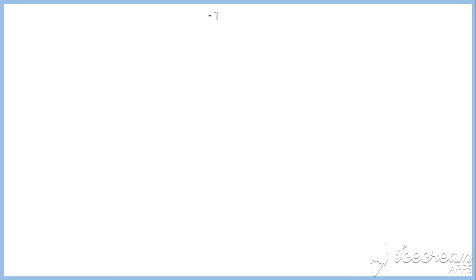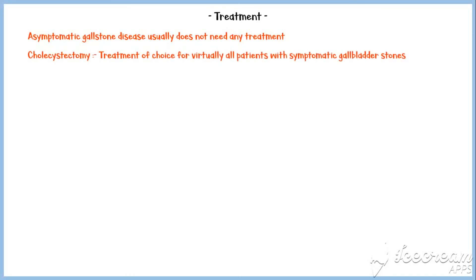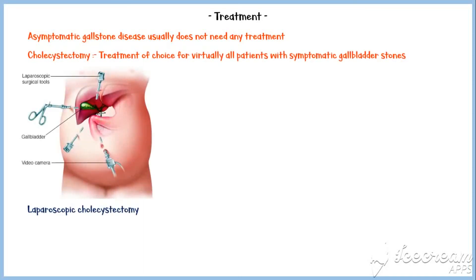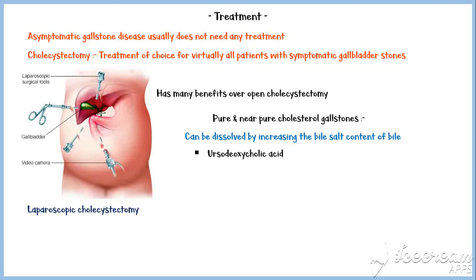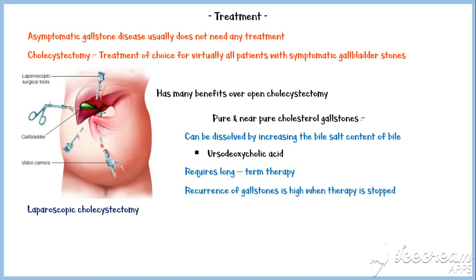Finally, let's discuss the treatment of gallstone disease. Asymptomatic gallstone disease usually does not need any treatment unless it becomes symptomatic. Cholecystectomy is the treatment of choice for virtually all patients with symptomatic gallbladder stones. Laparoscopic cholecystectomy is the most preferred method because it has many benefits over open cholecystectomy. In addition, pure and near-pure cholesterol gallstones can be dissolved by increasing the bile salt content of bile by giving oral agents like ursodeoxycholic acid. However, this requires long-term therapy, and the recurrence of gallstones is high when therapy is stopped.